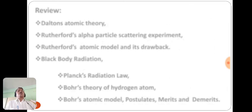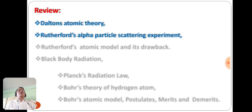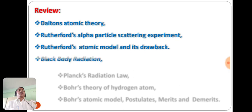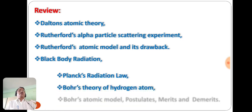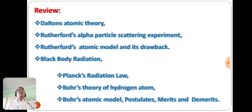Today we studied Dalton's atomic theory, Rutherford's alpha particle scattering experiment, Rutherford's atomic model and its drawbacks, black body radiation, Planck's radiation law, Bohr's theory of hydrogen atom, and Bohr's atomic model with its postulates, merits and demerits. The remaining part of this chapter will be covered in the next video. Thank you for watching the complete video.